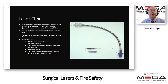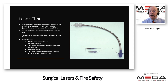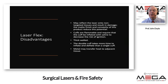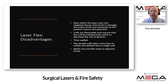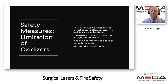An example of a specialized tube is the Laser-Flex: an airtight stainless steel spiral tube available in cuffed and uncuffed versions. The metal components are not flammable, though they may be difficult to place using fiber optics in difficult airway patients. This tube features a double cuff so if one bursts you still have protection. Disadvantages: it may reflect the laser onto non-targeted tissues; the cuffs are still flammable and must be inflated with saline to decrease ignition risk; the double cuff takes more time to inflate and deflate; and the metal may transfer heat to adjacent tissue.